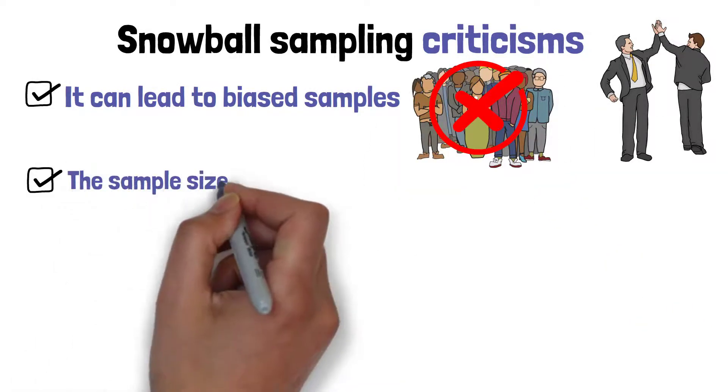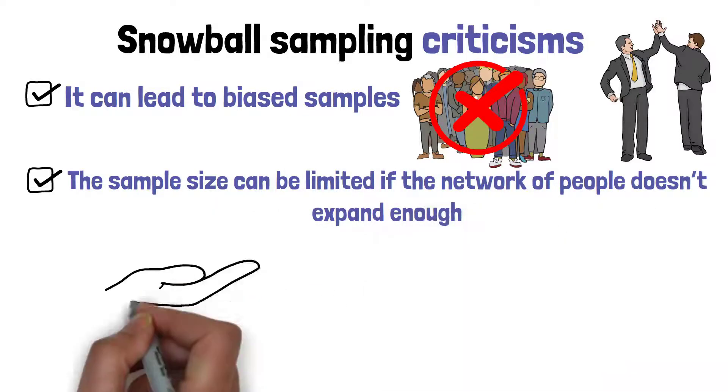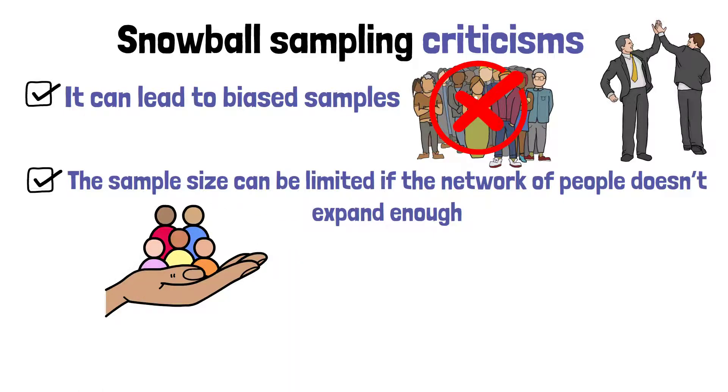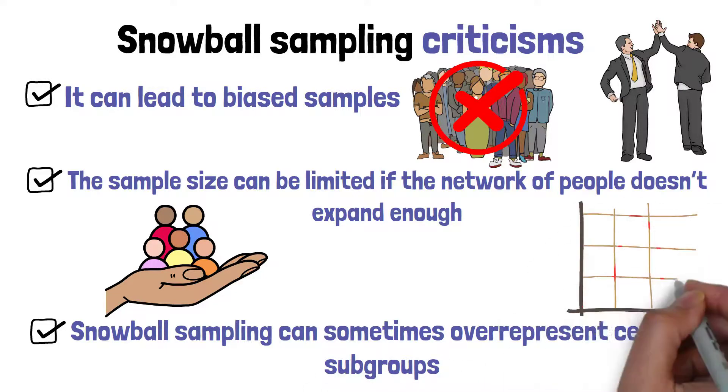Another issue is that the sample size can be limited if the network of people doesn't expand enough, leaving the researcher with fewer participants than they need. Additionally, snowball sampling can sometimes over-represent certain subgroups, leading to skewed results.